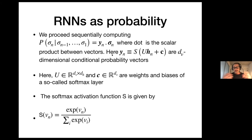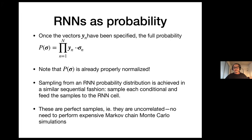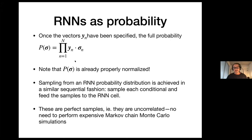The softmax layer gives you a conditional distribution or probability distribution. As long as everything is real, this softmax layer gives you a conditional distribution. Then by computing all the conditionals sequentially, you can compute the probability of the entire configuration sigma by multiplying them — the chain rule had all those multiplications, and that corresponds to this product here.